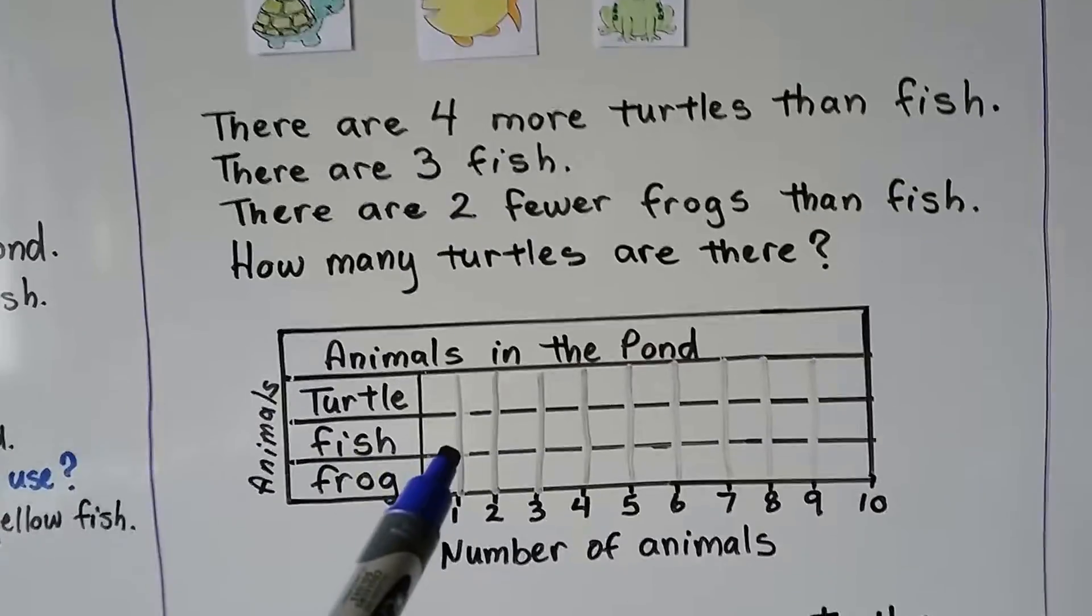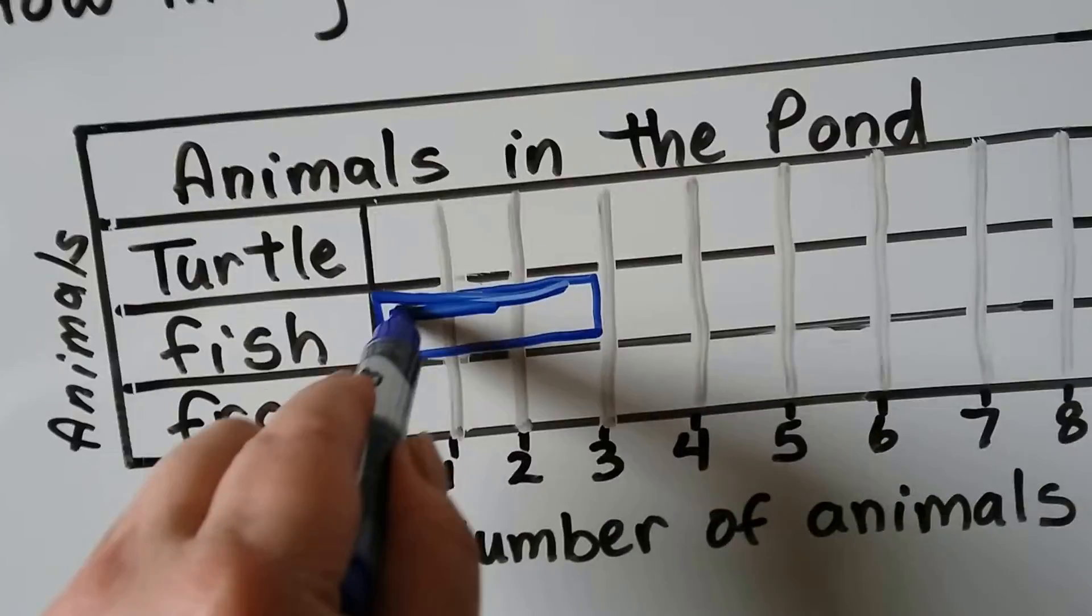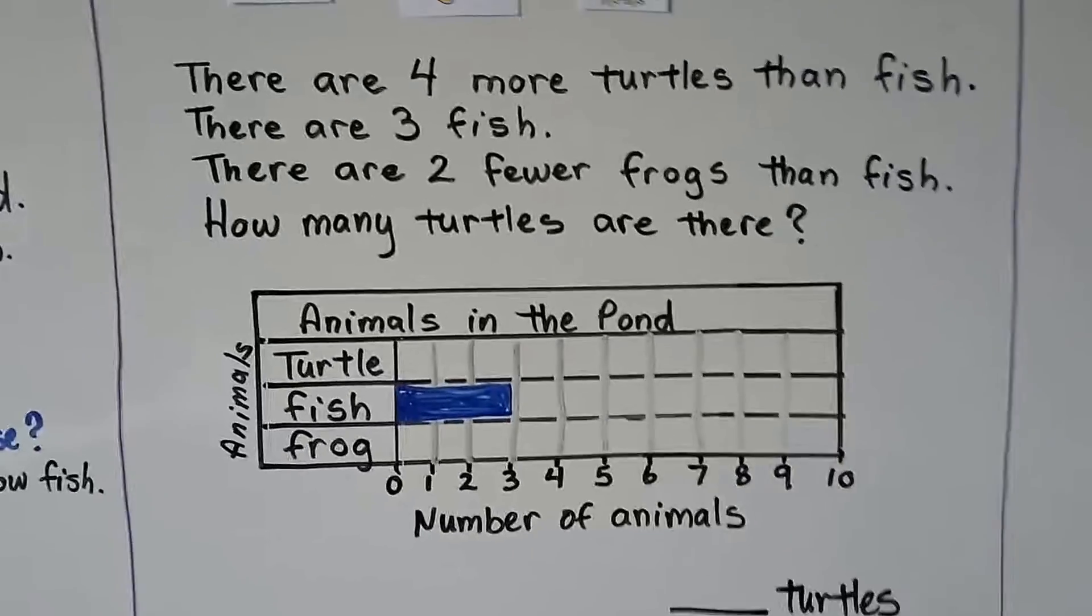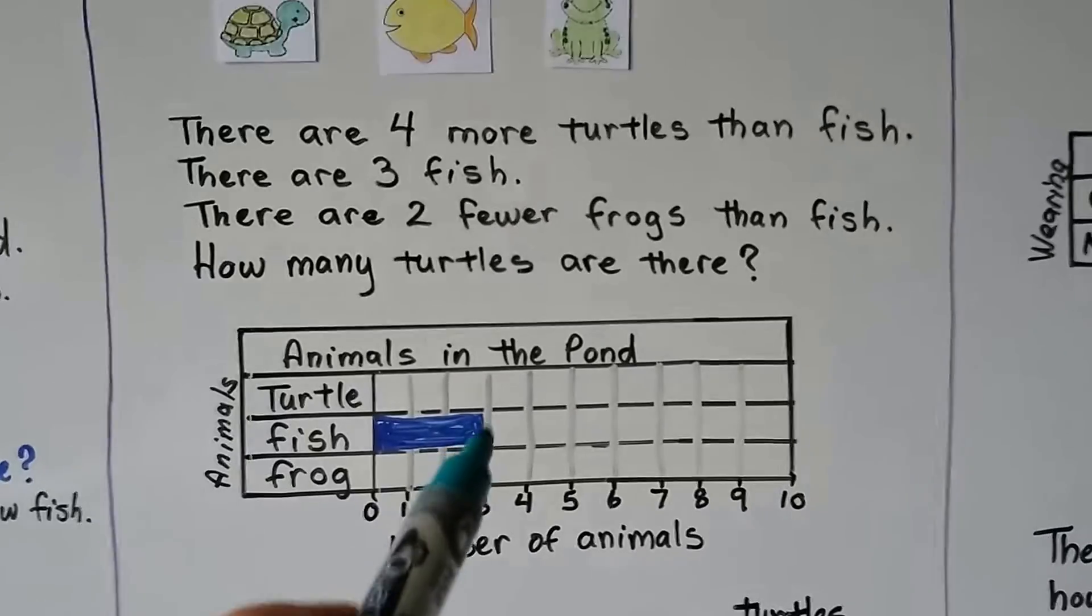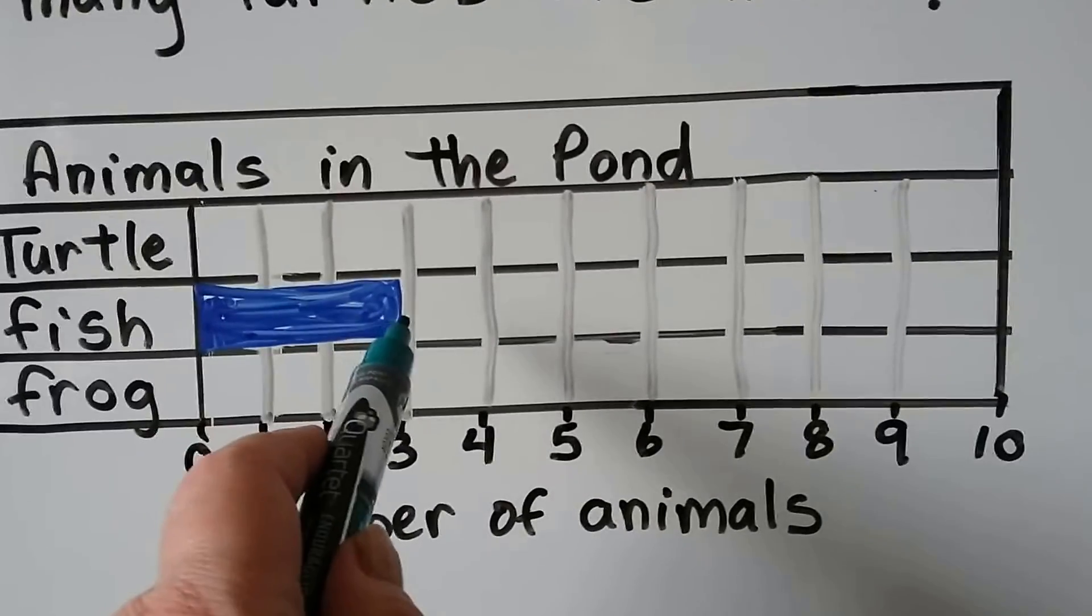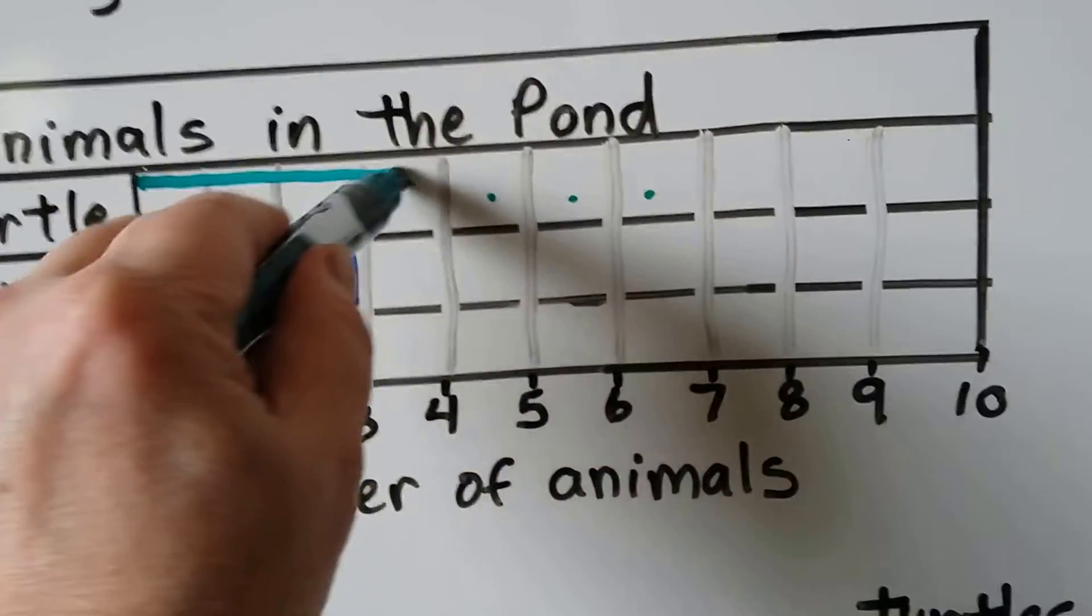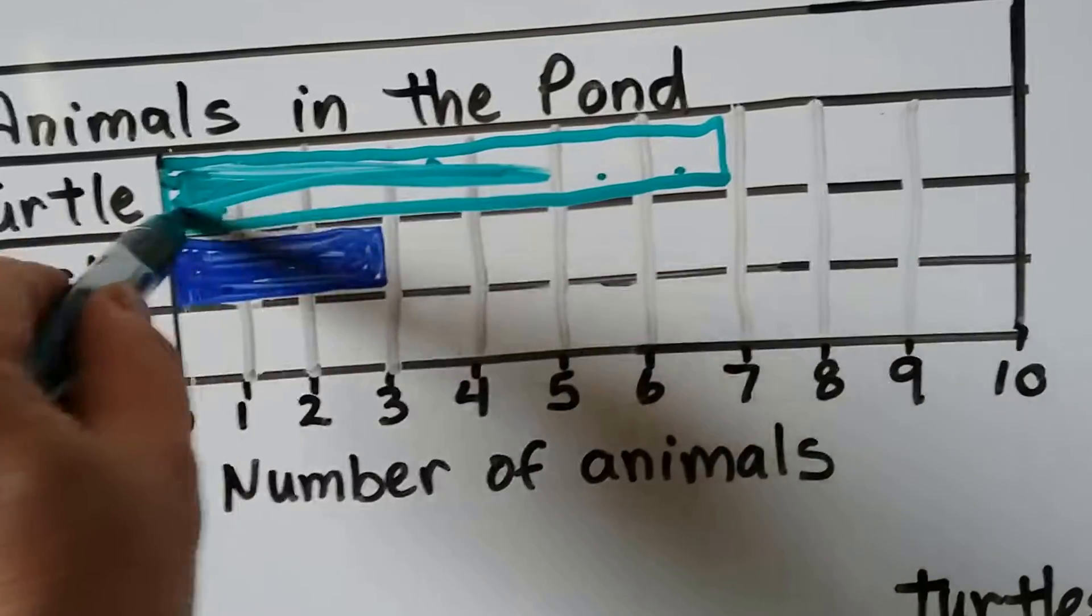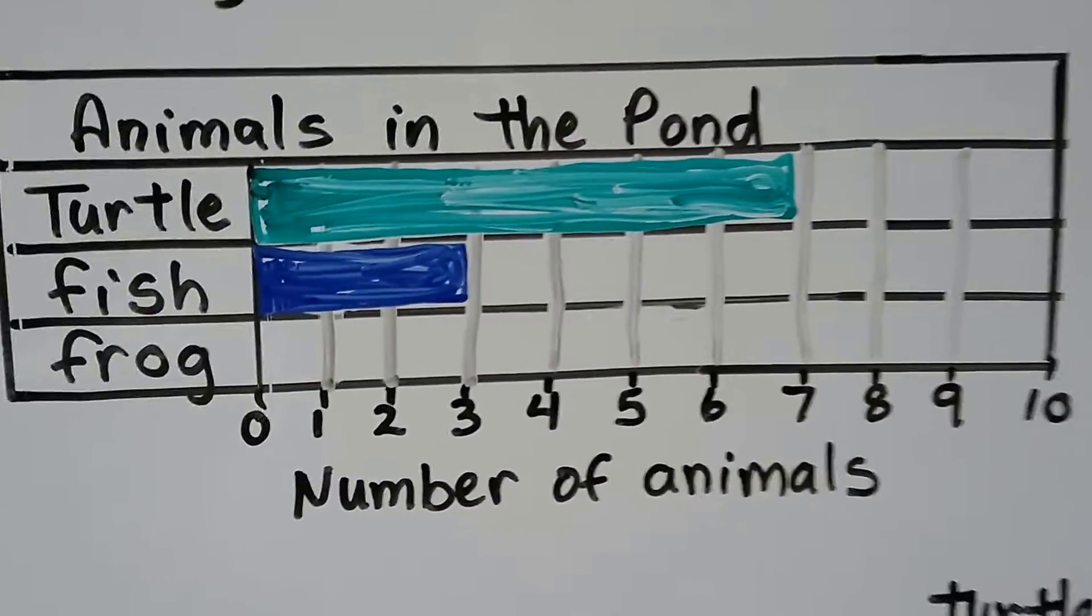We know there are three fish, so let's fill in the fish up to three. One, two, three. So that's going to be our fish. The bar that represents how many fish there are. Now it says there are four more turtles than fish. That means there's going to be four more than this three. So our turtle bar is going to have to have four more squares filled in than the fish one. So that would be one, two, three, four. Well, that puts us at seven. So we need to fill in seven for the turtle one. That's four more than the fish, isn't it? Get this all colored in. You'll do a better job when you use crayons. Markers don't do that good of a job.